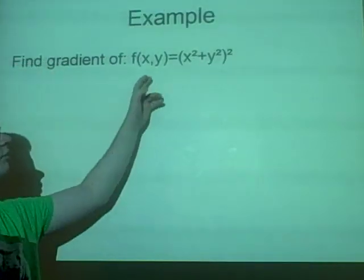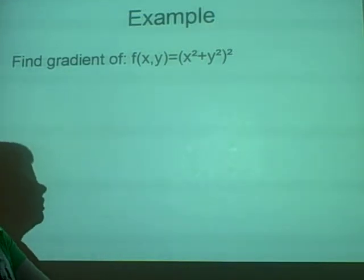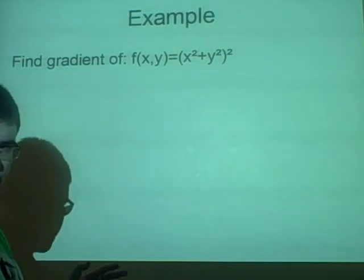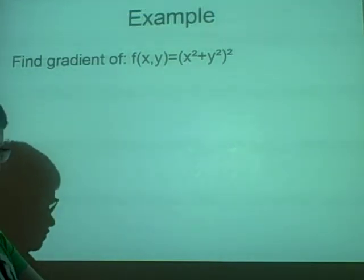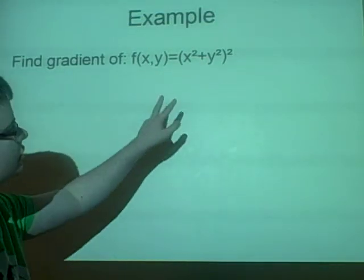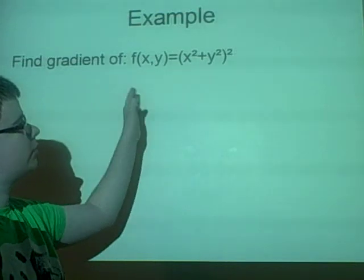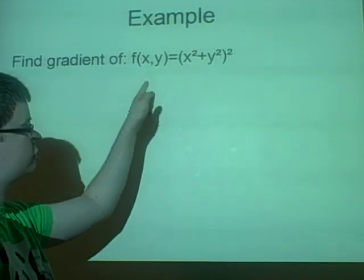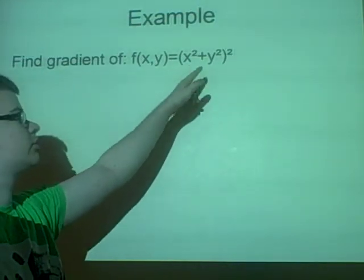So, an example. We have f(x,y) equals (x²+y²)². So we want to find the partial derivative with respect to x first. We differentiate the bracket, that will give us 2x, and then we take the power down, so it gives 4x(x²+y²).